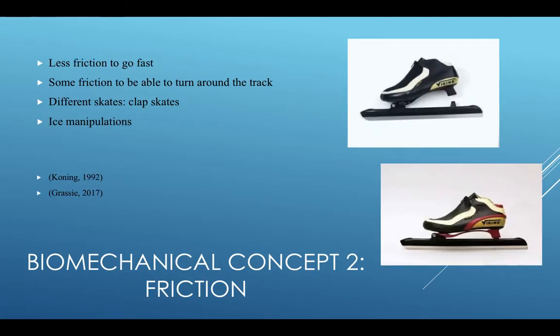Our second concept is friction. Friction is the resistance that one surface or object encounters when moving over another. Similar to how you want different car wheels for different roads, skaters need the right amount of friction on ice. They do not want a lot of friction, but they want some so they can stop or turn corners quickly, while still maintaining high intensity speeds.